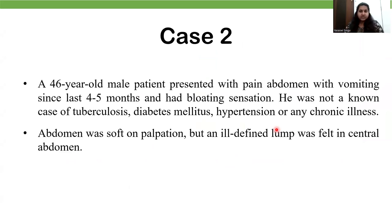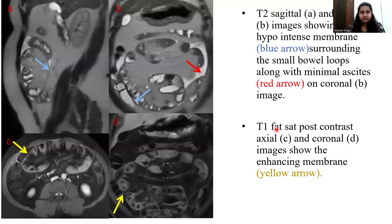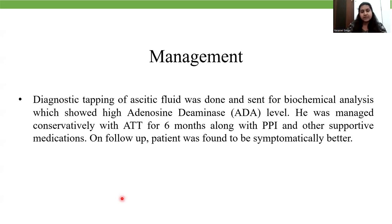Case 2: A 46-year-old male patient presented with pain abdomen and vomiting since the last four to five months with bloating sensation. He was not a known case of hypertension, diabetes, TB, or any other chronic illness. Abdomen was soft and an ill-defined lump was felt in the central abdomen. T2 sagittal and coronal images showed a hypointense membrane surrounding the small bowel loops with minimal ascites. T1 fat-sat axial and coronal images showed an enhancing membrane. Diagnostic tapping of ascitic fluid and serum biochemical analysis showed high adenosine deaminase level, and the patient was managed conservatively with ATT for six months and found to be symptomatically better on follow-up.